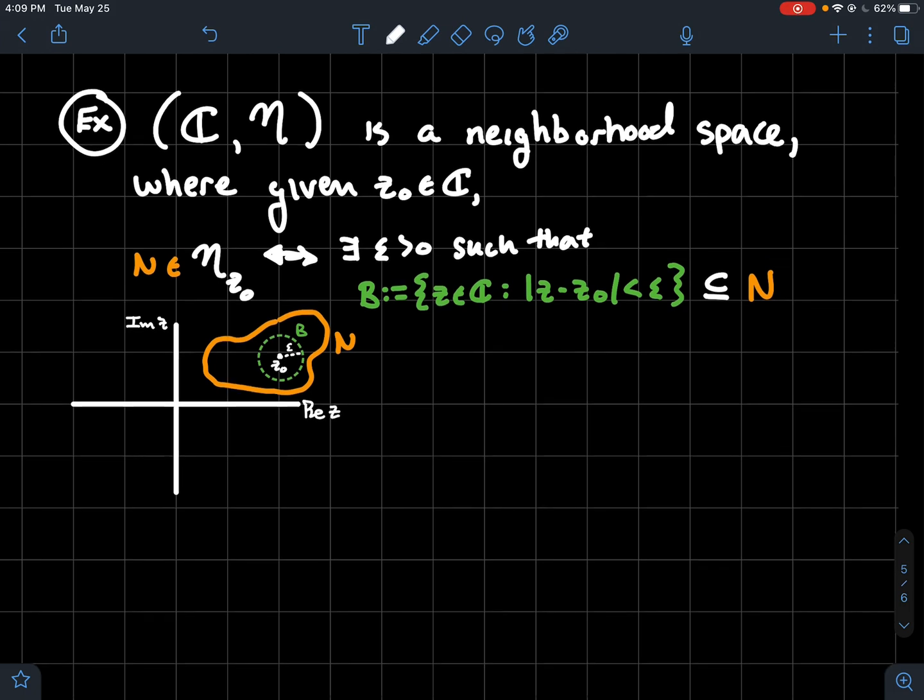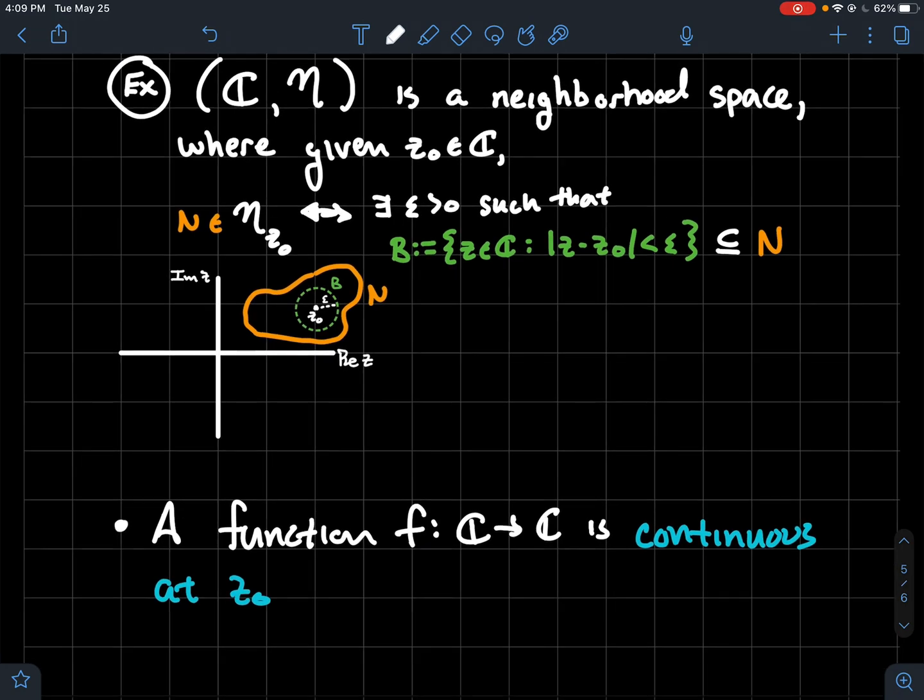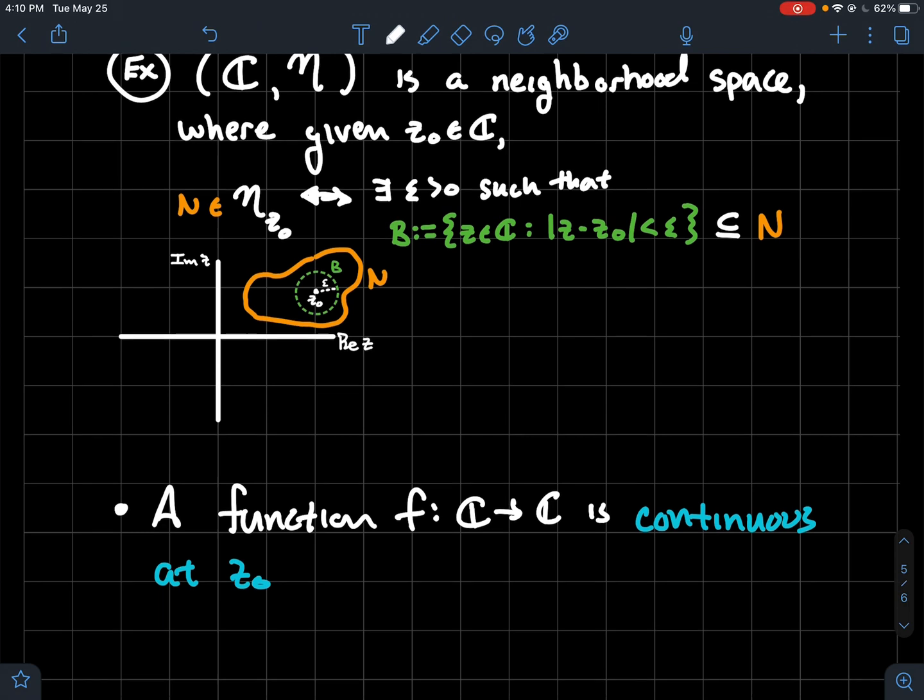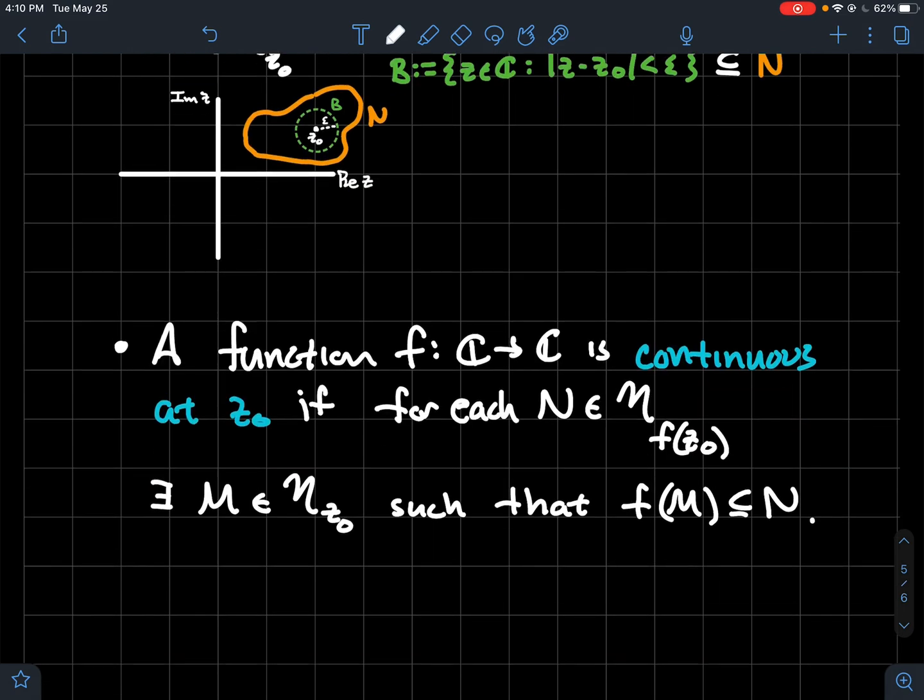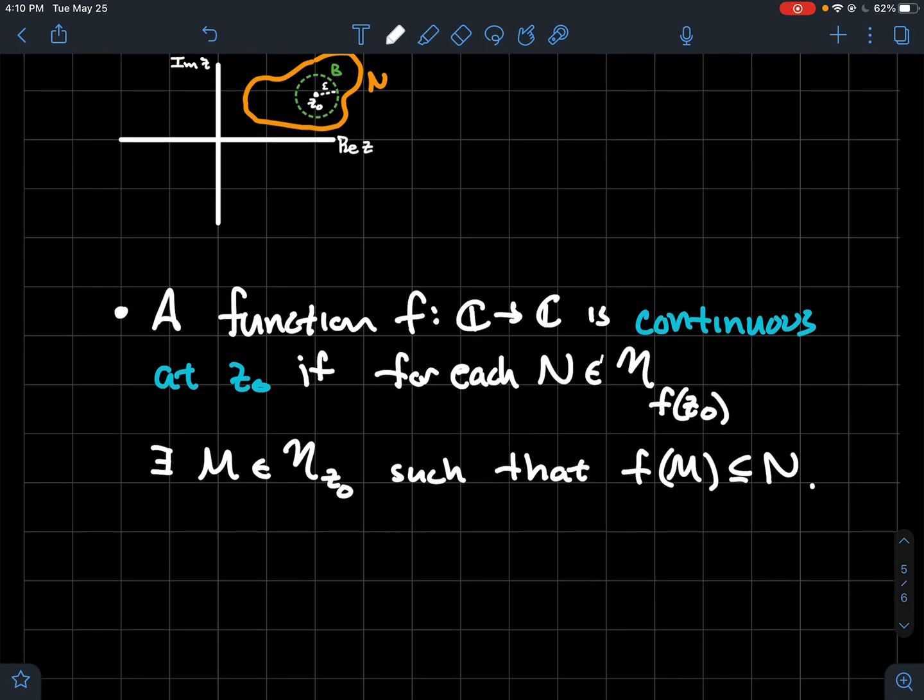And so what do I want to do? I just want to take some things from complex analysis or even the corresponding ideas in real analysis that I think you're familiar with already and just say them to you with this new terminology. This new terminology of a neighborhood space. So one that I think we're probably familiar with is a function from C to C is continuous at a particular complex number if, for each neighborhood of f of z zero there should be a corresponding neighborhood of z zero such that when you plug in all the points in that neighborhood into your function the output should be completely contained inside of N. So I've just taken the concept of continuity that you've probably seen before with epsilons and deltas and I've reframed it in a way that only depends upon just neighborhoods of a particular point, really neighborhoods of two particular points, z zero and f of z zero.